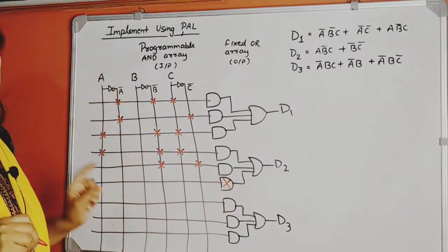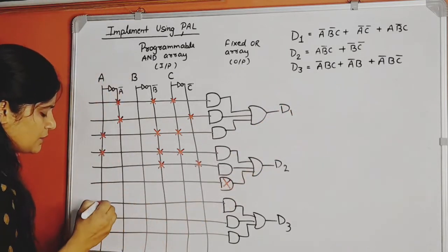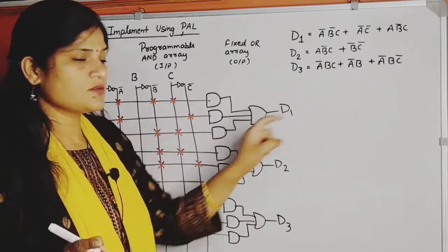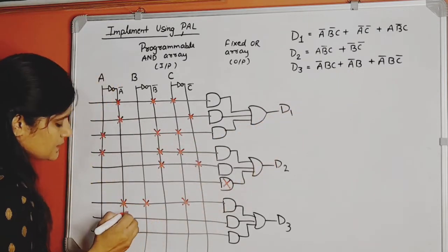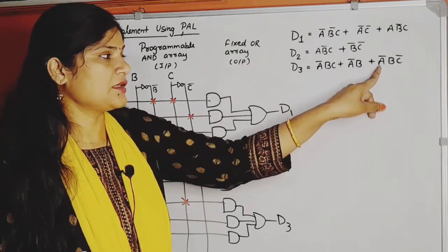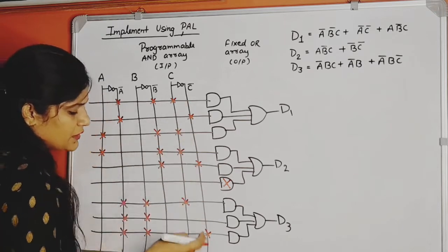Now for D3, first term is A̅BC - A̅, B, and C. Next term is A̅B̅, means A̅ and B̅. Third term is A̅BC̅, means A̅, B, and C̅.